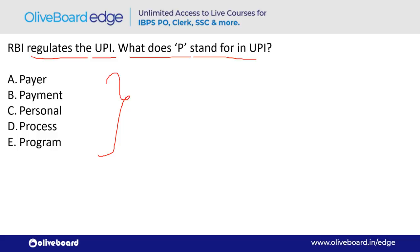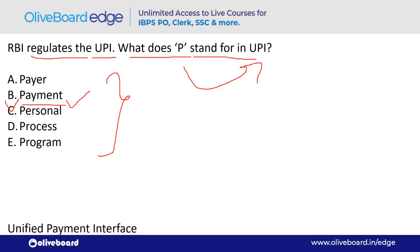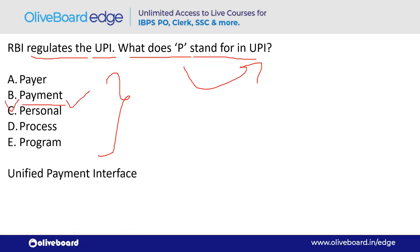RBI regulates UPI. What does 'P' stand for in UPI? P stands for 'Payment' — UPI is Unified Payment Interface. It was developed by NPCI — National Payment Corporation of India — whose headquarter is in Mumbai.